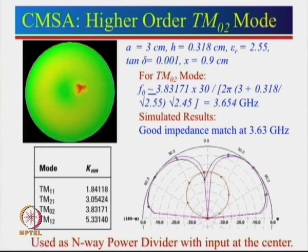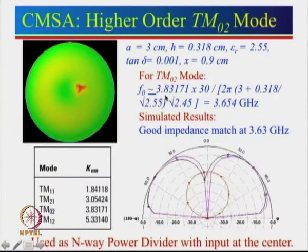Compared to the conventional cascaded approach — splitting 1 to 2, 2 to 4, 4 to 8, 8 to 16 — this circular TM02 configuration gives an n-way power divider in a very simple, compact form. All ports receive equal power and are at the same phase.